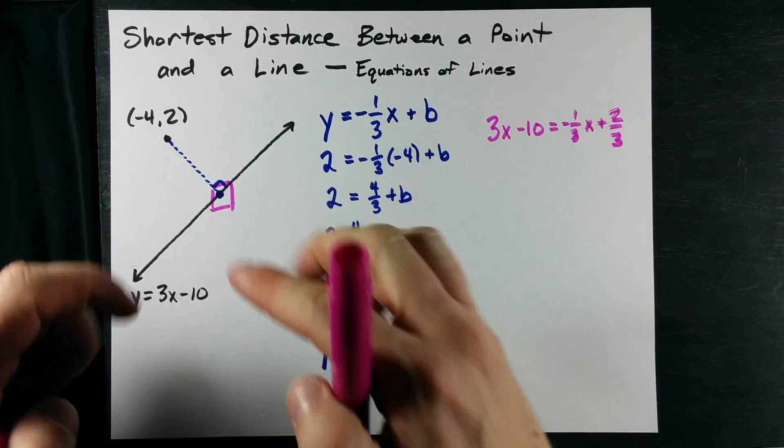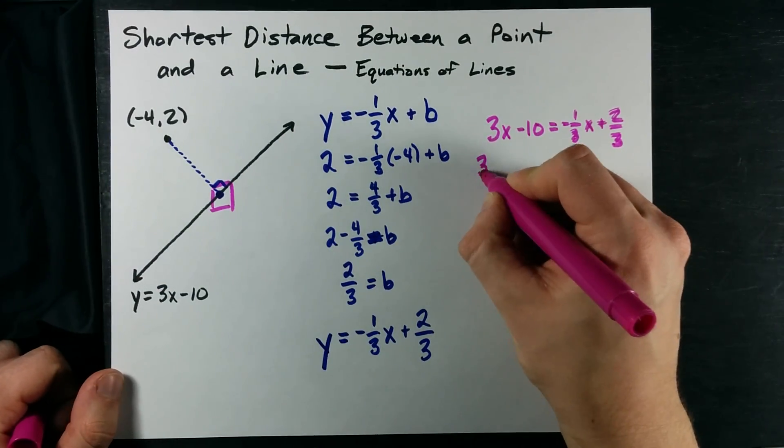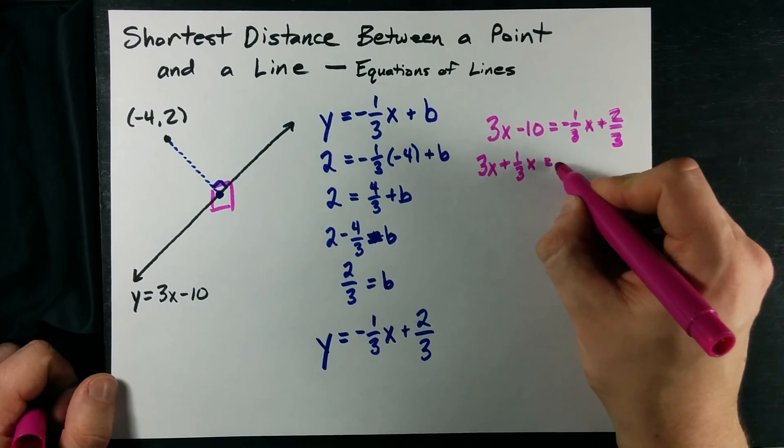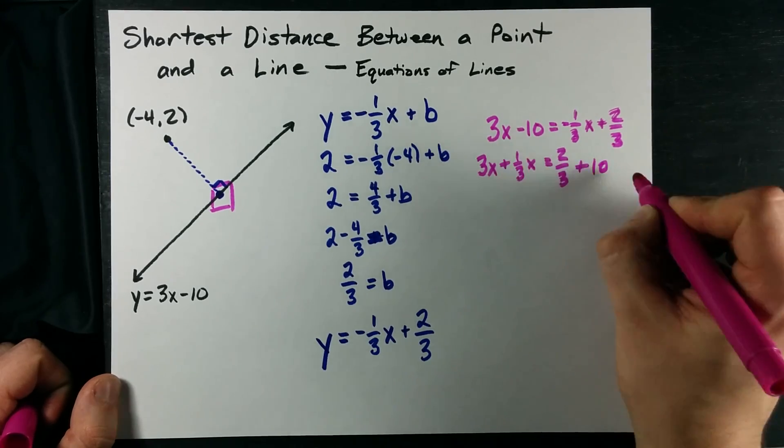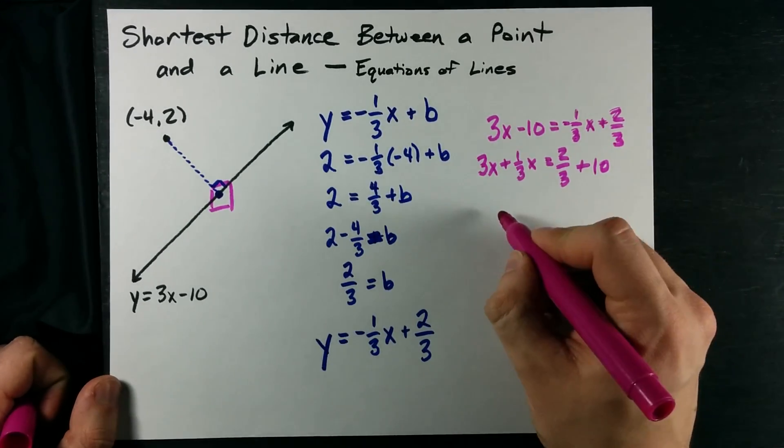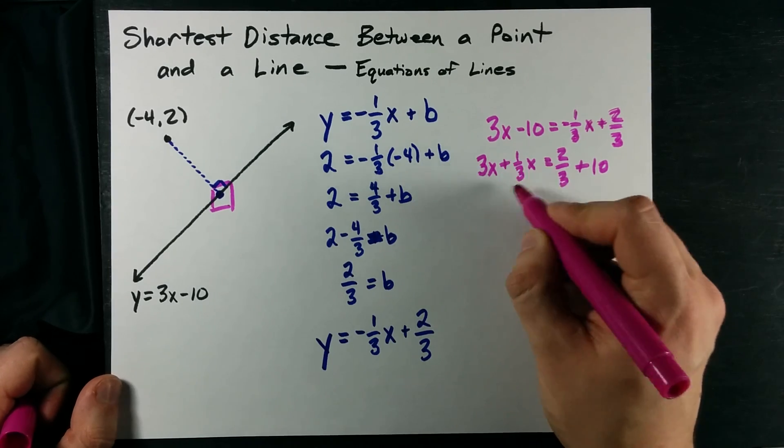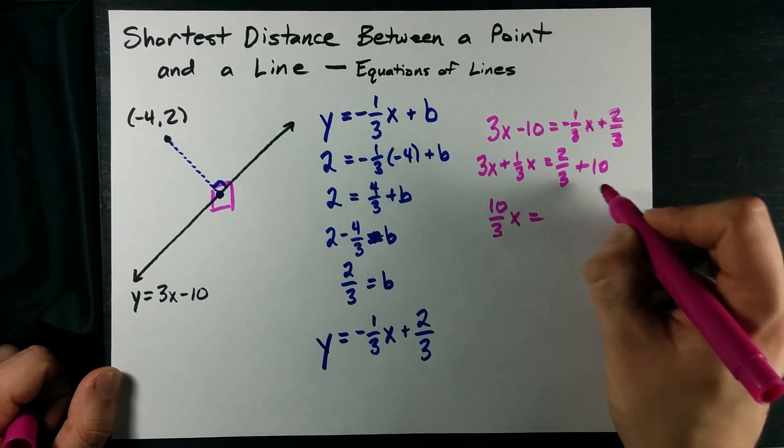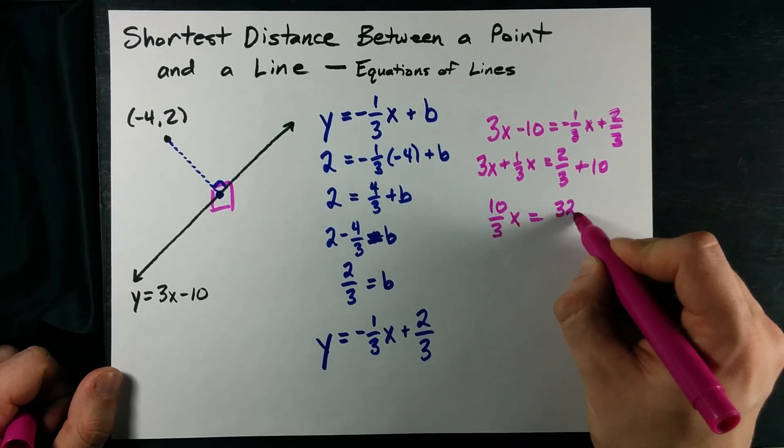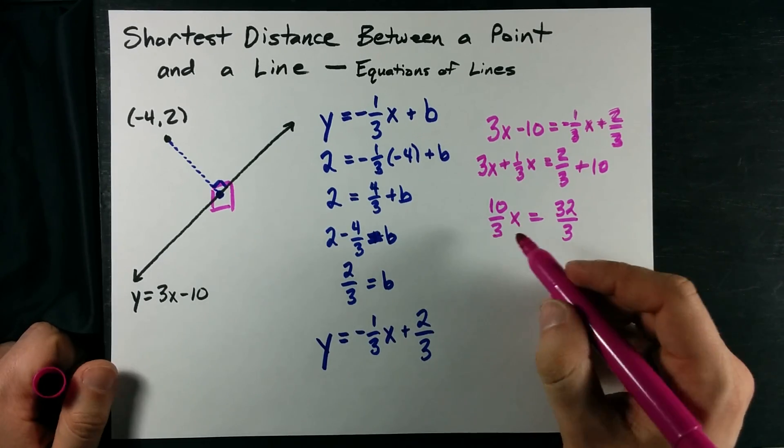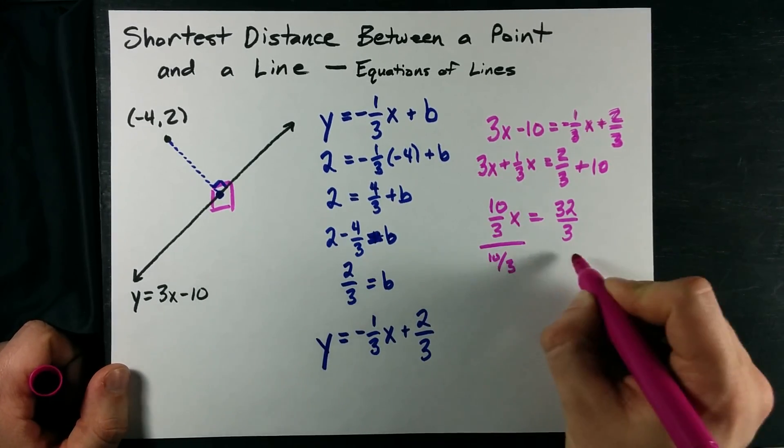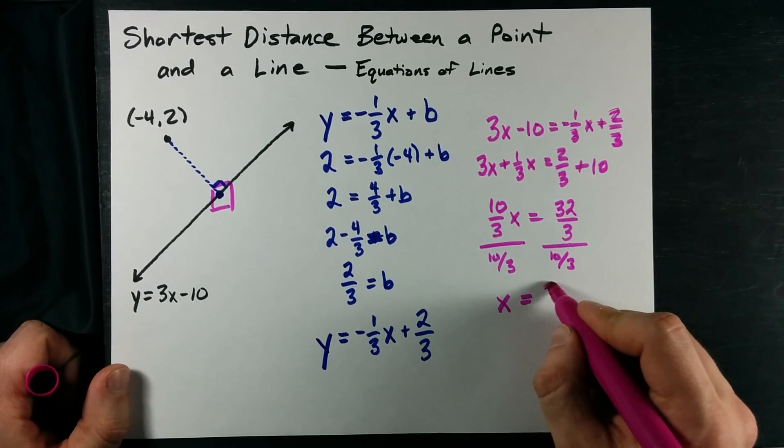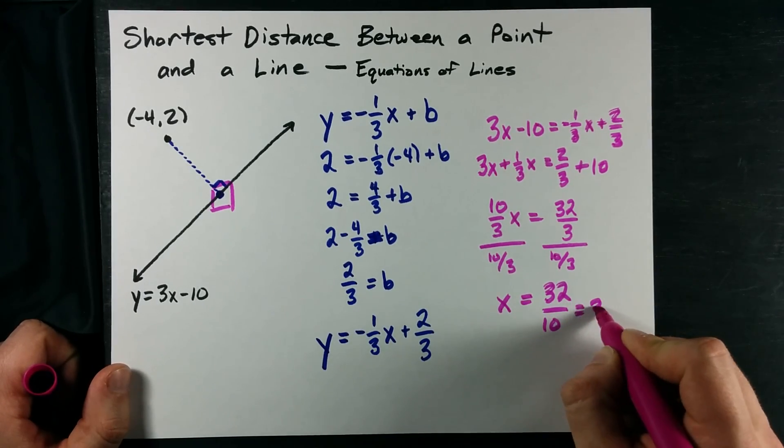I'm going to put all my x's on one side, all my numbers on the other. That's 3x plus 1 third x on the left, and that's 2 thirds plus 10 on the right. That gives me, now I'm going to do my fraction work in my head here. That's 10 thirds of x here, and this is 32 thirds here. Then, in order to solve for x, I divide both sides by whatever is in front of x. When I do that, I get 3.2.